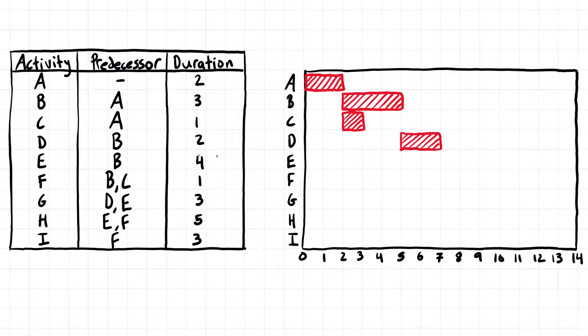Then activity E also can't start until activity B is finished, and this one is four days long. So again, we find where activity B finishes, we drop down to E, and we're going to put this one on for four days.